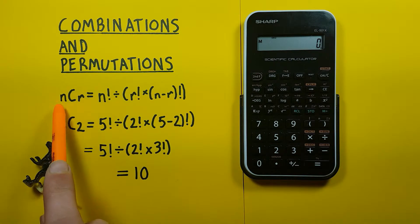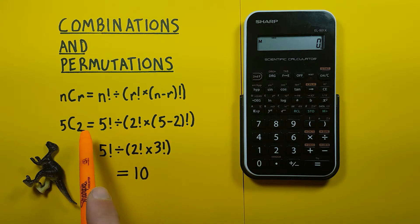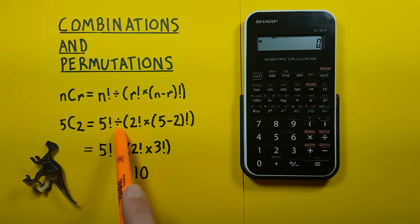Well we plug those numbers into the formula which gives us 5 factorial divided by bracket 2 factorial times 5 minus 2 factorial. Which we can simplify down to 5 factorial divided by 2 factorial times 3 factorial.